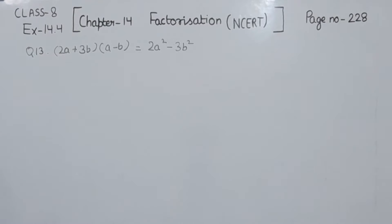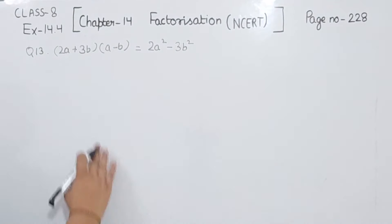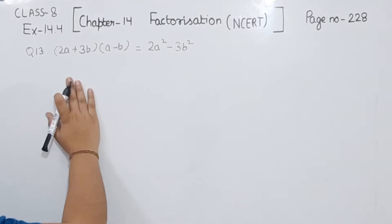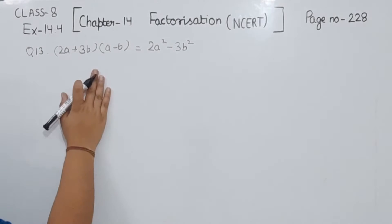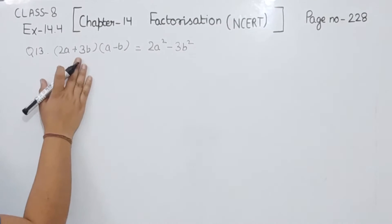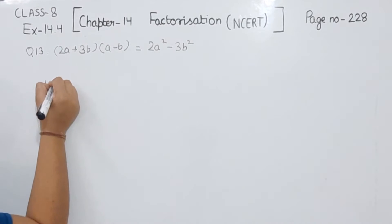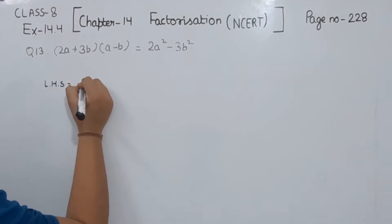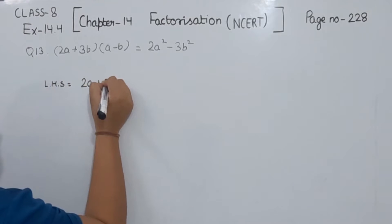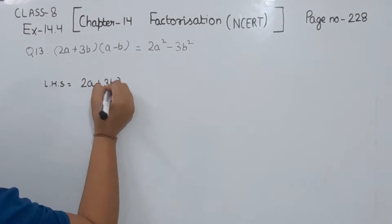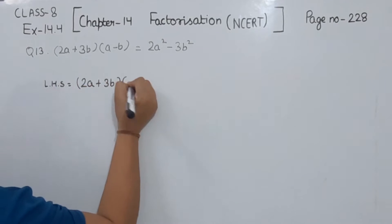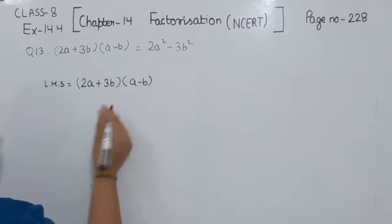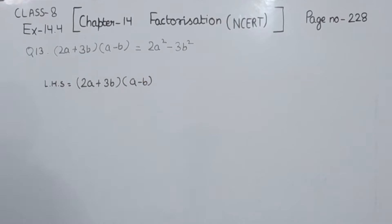We have to prove whether the right hand side is equal to the left hand side, or if not, what the correct statement is. The expression we are having is (2A + 3B)(A − B).